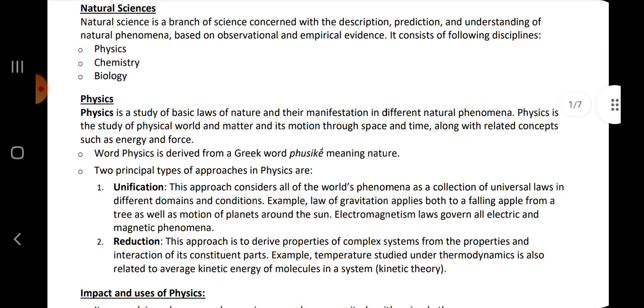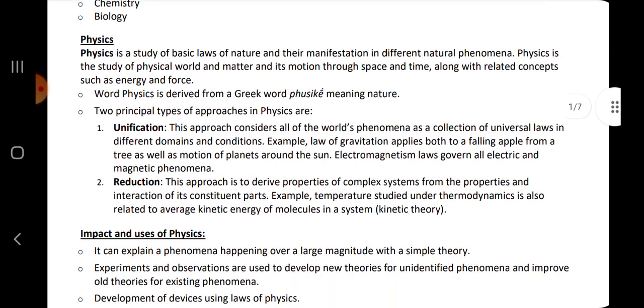Natural science is a branch of science concerned with the description, prediction and understanding of natural phenomena based on observation and empirical evidence. It consists of following disciplines: physics, chemistry and biology.